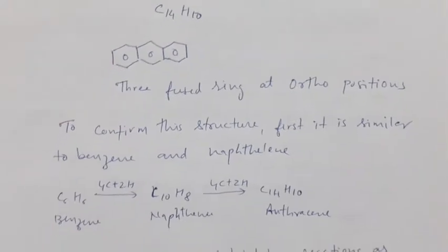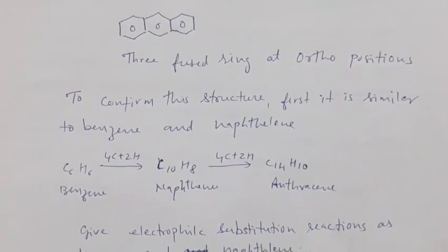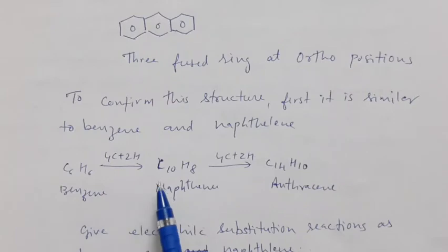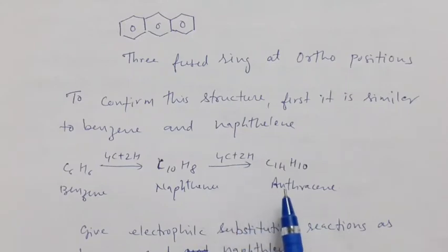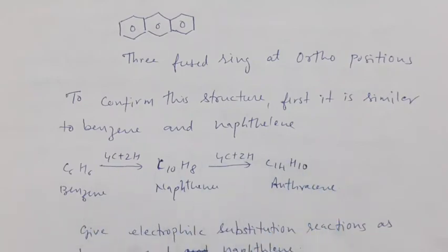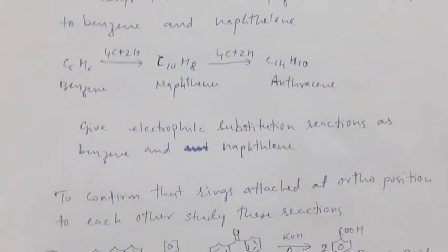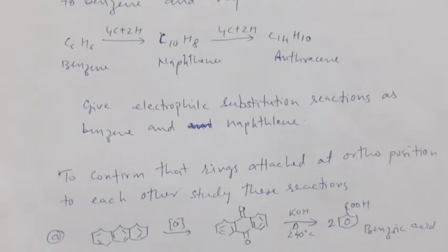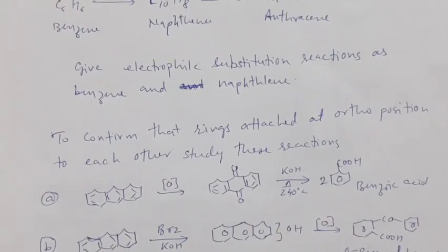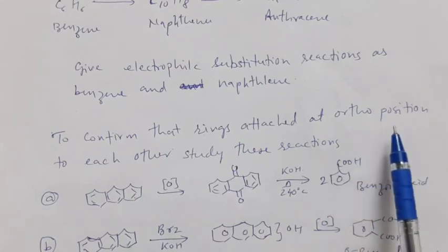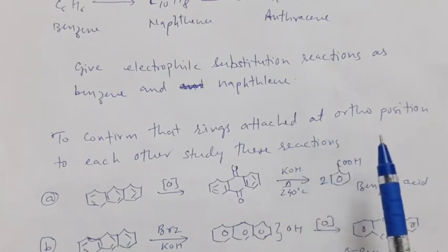Anthracene seems to be similar to benzene and naphthalene. Benzene, if it reacts with 4 carbon atoms and 2 hydrogen atoms, gives naphthalene, and naphthalene by the addition of 4 more carbon atoms and 2 hydrogen atoms gives anthracene. So they are related to each other. Anthracene also gives electrophilic substitution reactions, which is an aromatic characteristic, confirming it is an aromatic compound with rings attached at the ortho position.